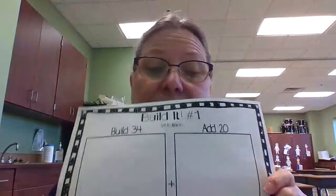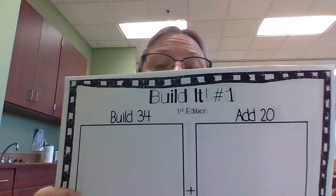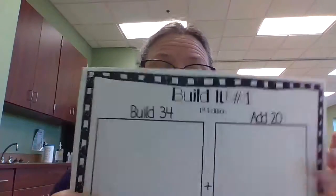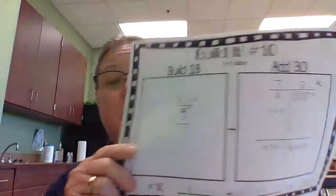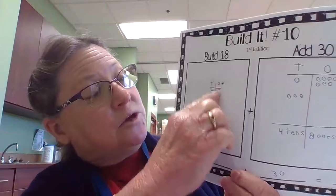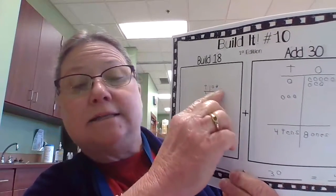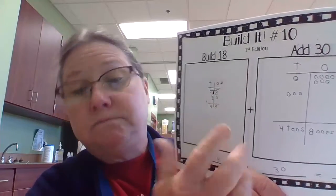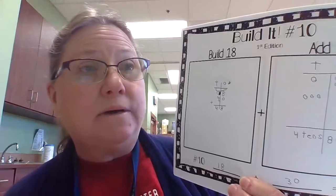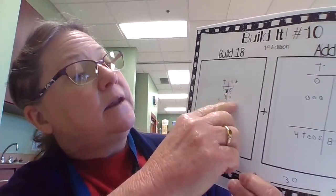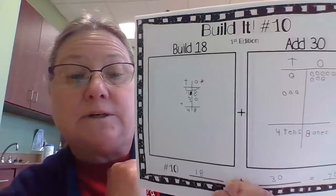Your math today — I showed you this yesterday. You have your Build It packet. It has ten of those in it, and I showed you yesterday how I wanted you to do this. In the first box, you make the small t with tens and ones and the star. You put your boxes underneath of it, and then you put your numbers in. 18 and 30 was our first number for today.